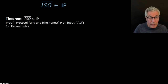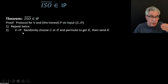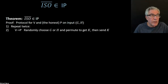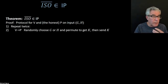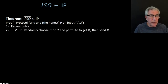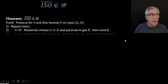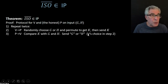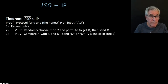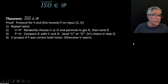The protocol is going to repeat the following thing twice — actually twice is going to be enough to get the bound we need. The verifier is going to randomly choose G or H, just like what the professor did, randomly permute the result to get a new graph K which is isomorphic to either G or H depending upon the choice, and then send that graph K. The prover's turn is to compare K with both of the original graphs — it's got to be isomorphic to one or the other — and report back which one, saying 'you picked G' or 'you picked H,' because the prover with its unlimited capabilities can determine that. Then V accepts if the prover was right both times.